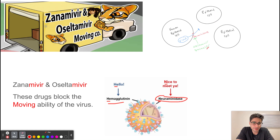The way oseltamivir and zanamivir work is by inhibiting neuraminidase. So if we inhibit neuraminidase, we're going to block the ability of the virus to leave the infected cell to cause an infection elsewhere — basically limiting the ability of the virus to spread in our body.